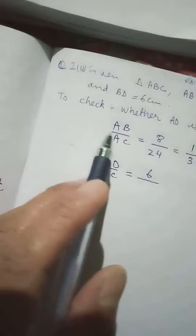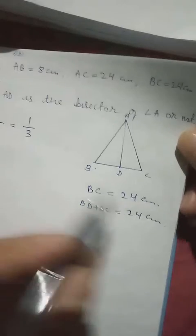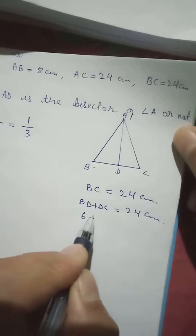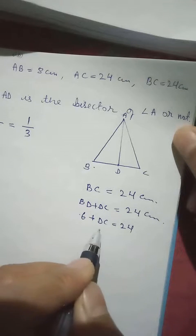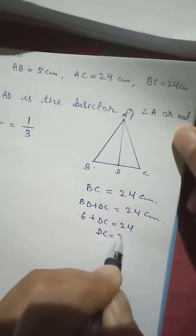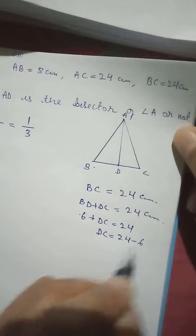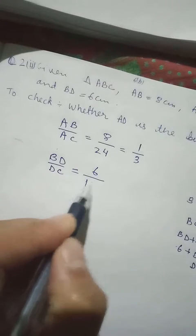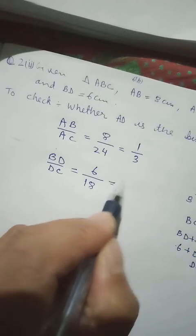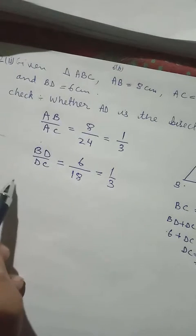But here we already have BD equal to 6cm, so this plus becomes minus when we take it to the other side. So we are left with 18cm. So here 6 into 1 is 6, 6 into 3 is 18. Now if we compare both ratios, the ratios are the same.